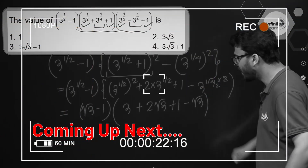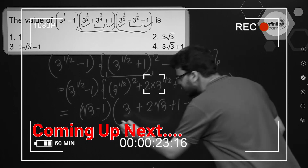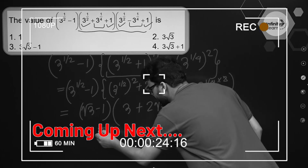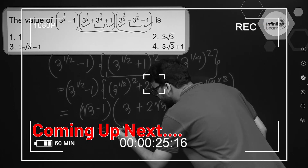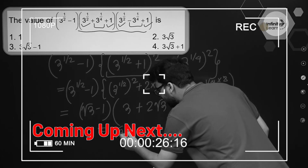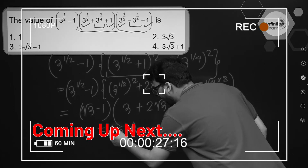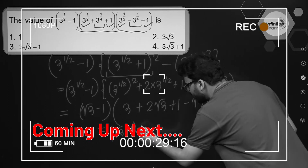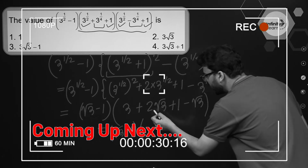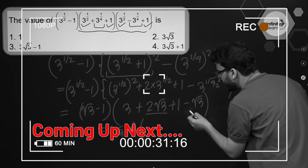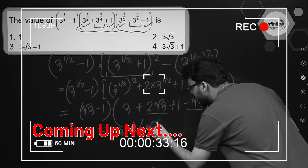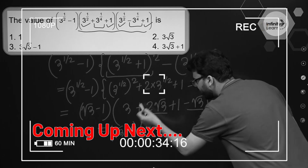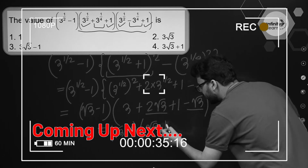Now let's simplify this whole thing. This will give us root 3 minus 1, and over here this is nothing but 2 root 3 minus root 3, that is root 3, and 3 plus 1 is 4 over here.